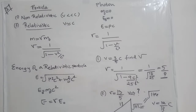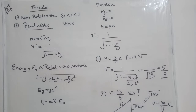What do we mean by non-relativistic? Non-relativistic means velocity is very much less than C, where C is the velocity of light. If you are considering a relativistic particle, V is approximately equal to C. Relativistic particles have velocity approximately equal to C, that is, the velocity of light.